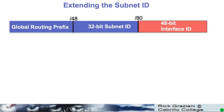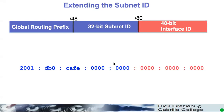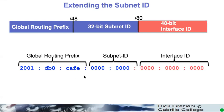Okay, so what if I wanted to subnet beyond my subnet ID into this interface ID? Now I'm only going to have a 48-bit interface ID. You definitely don't want to do this for your LANs, but I'll show you a case where you may want to. We decided to have a slash 80. So, what does that look like? Here's our global routing prefix. Now, we have, instead of a 16-bit subnet ID, we have 32 bits.